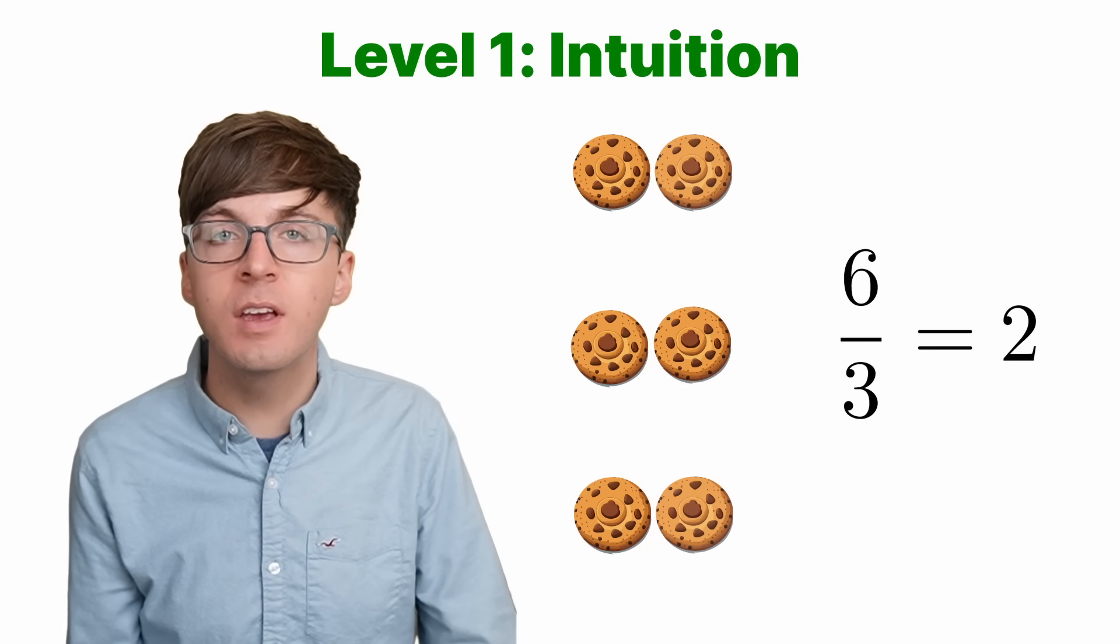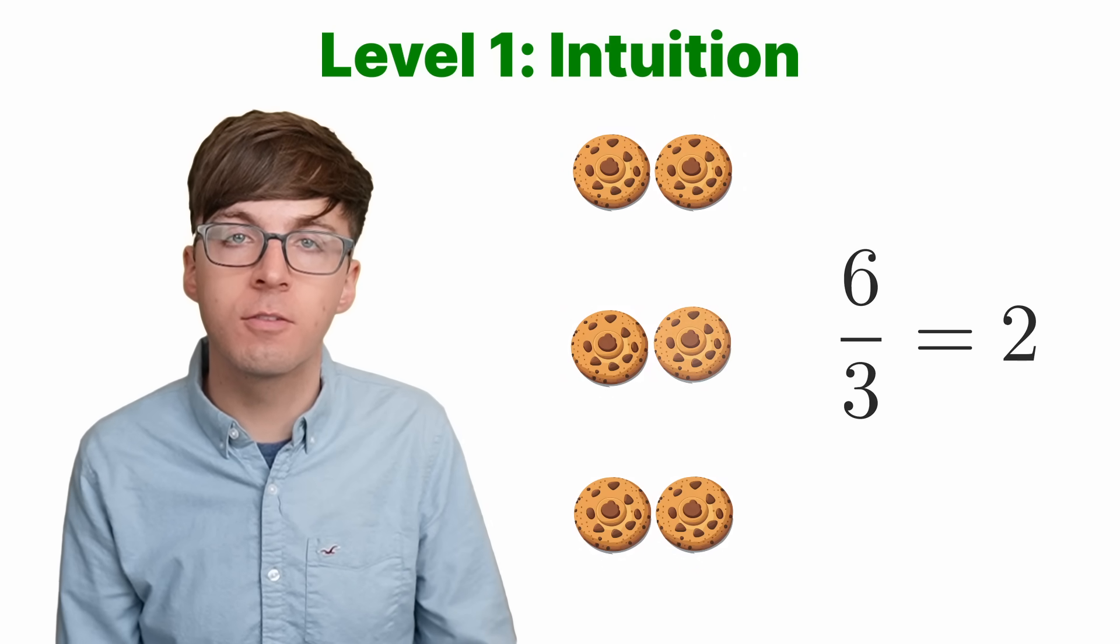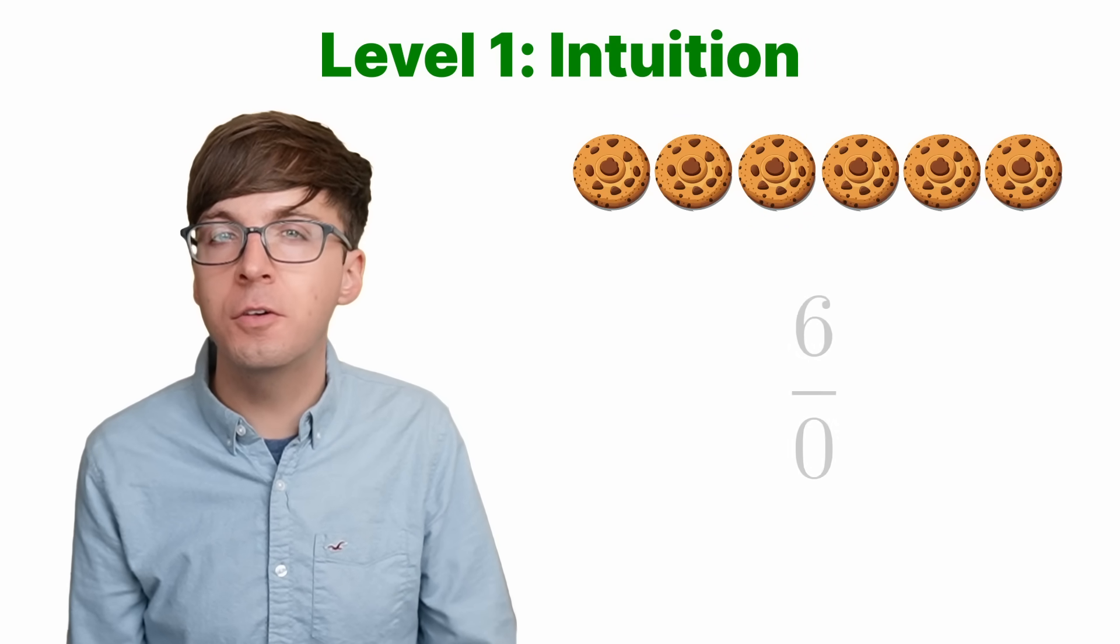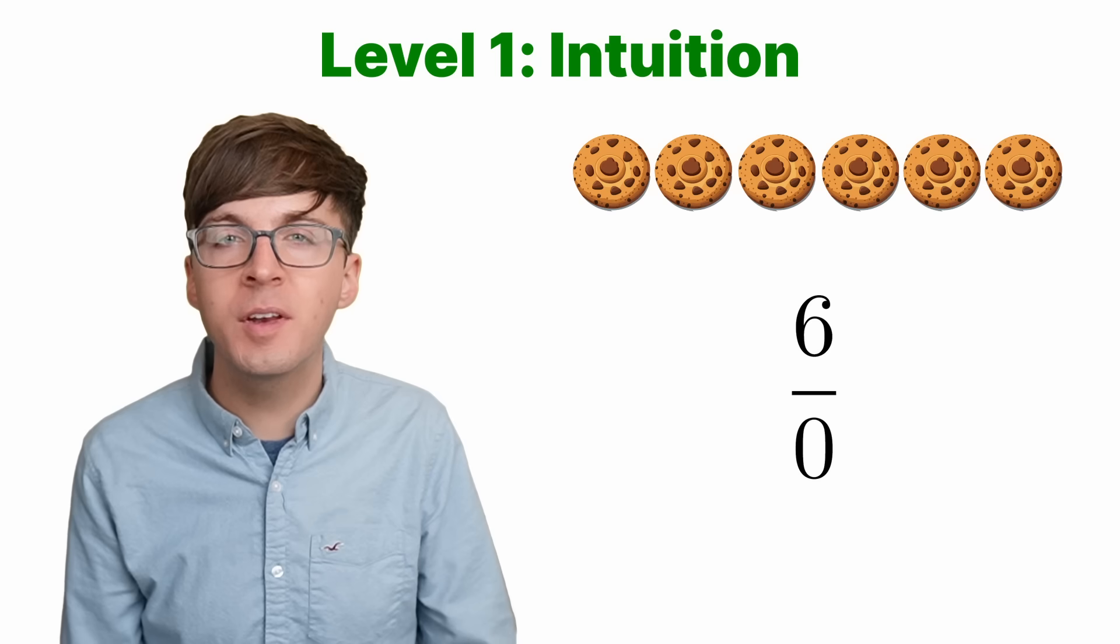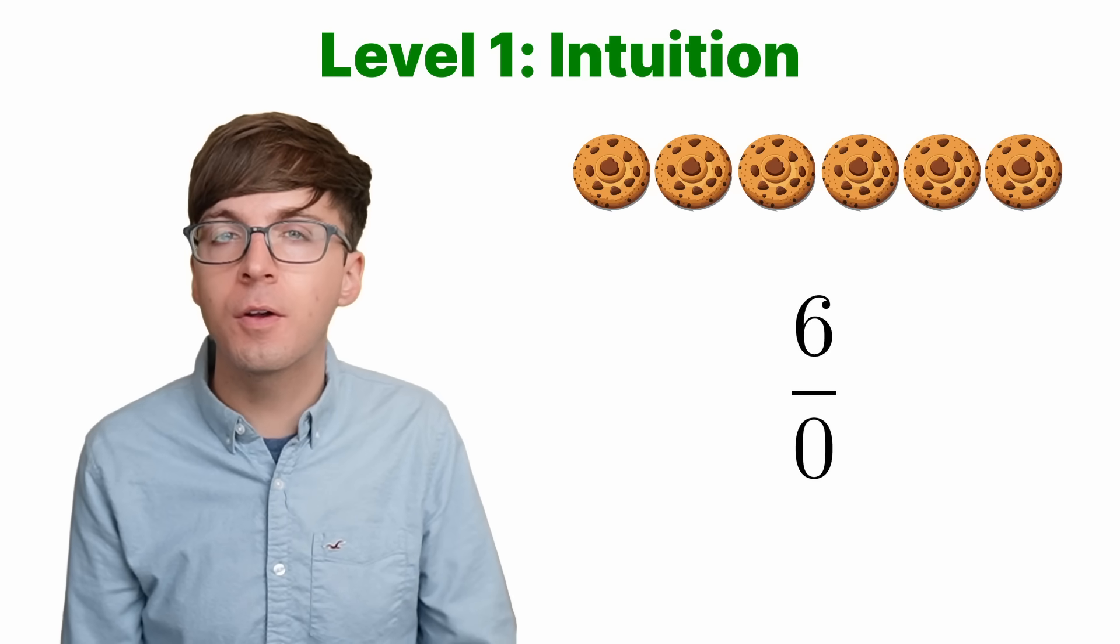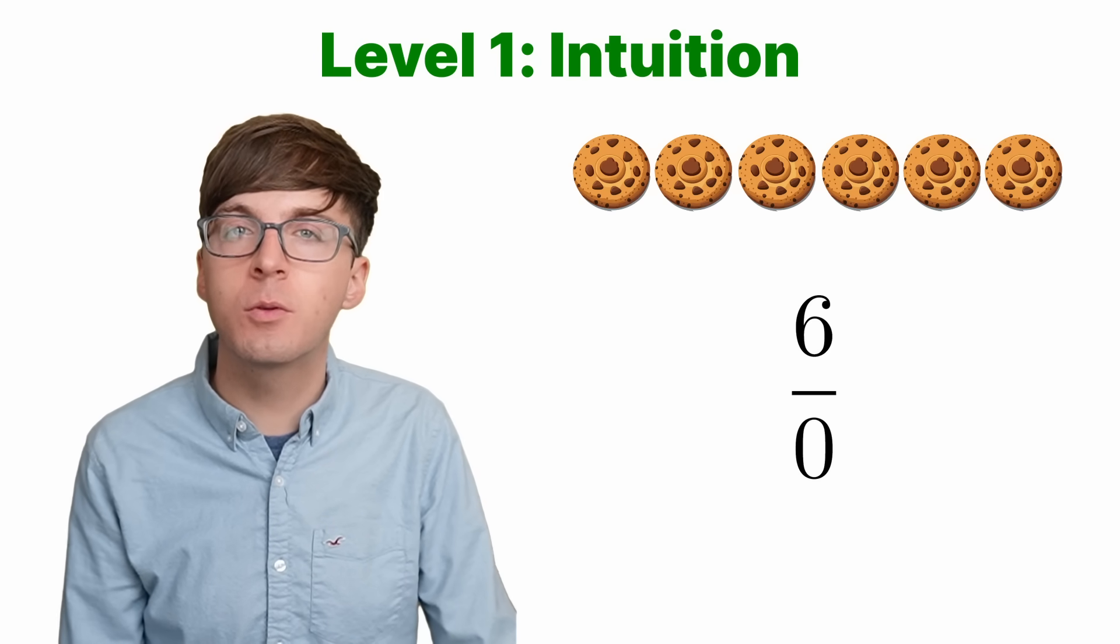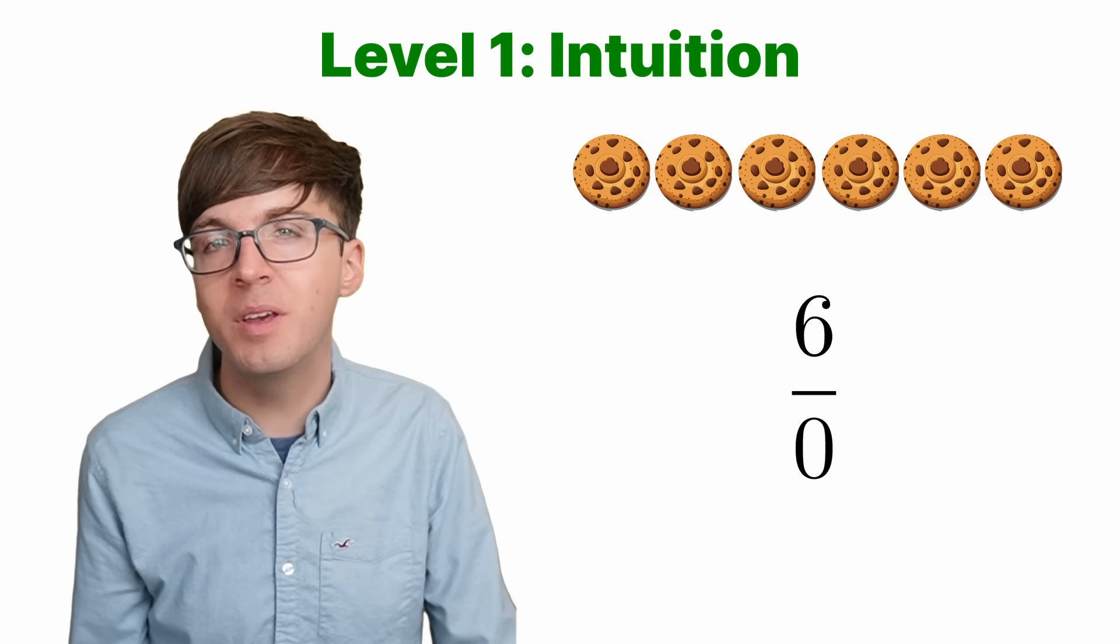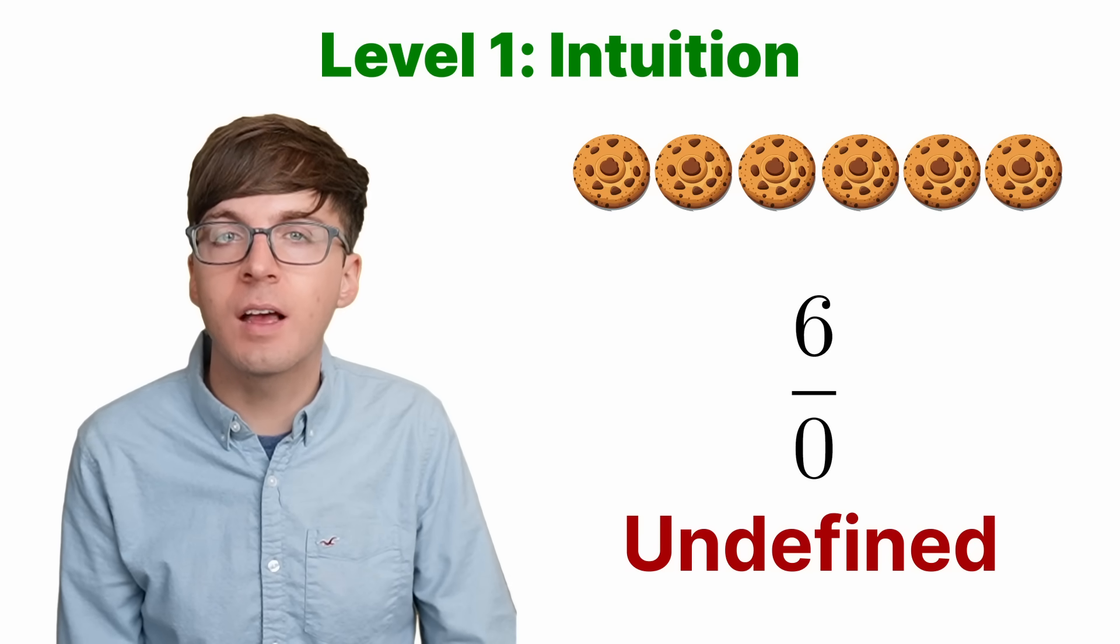And if you had three friends, six cookies divided by three friends equals two cookies each. But how do you split six cookies evenly among zero friends? No matter how many cookies you give each person, there are still no people to receive any cookies. So six cookies divided by zero people is undefined. It just doesn't make any sense to ask that question.